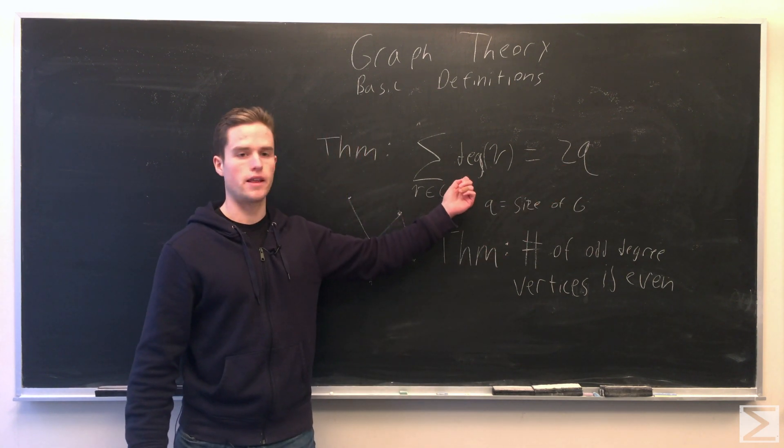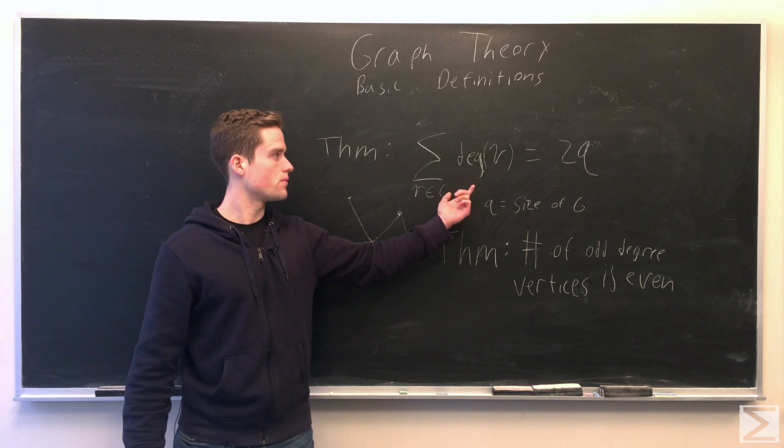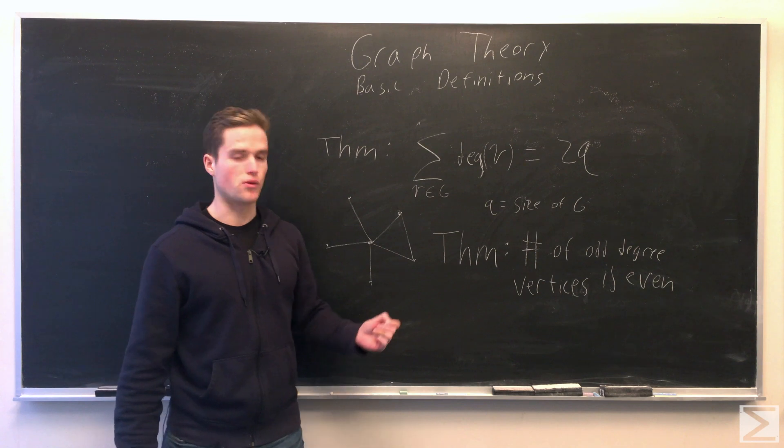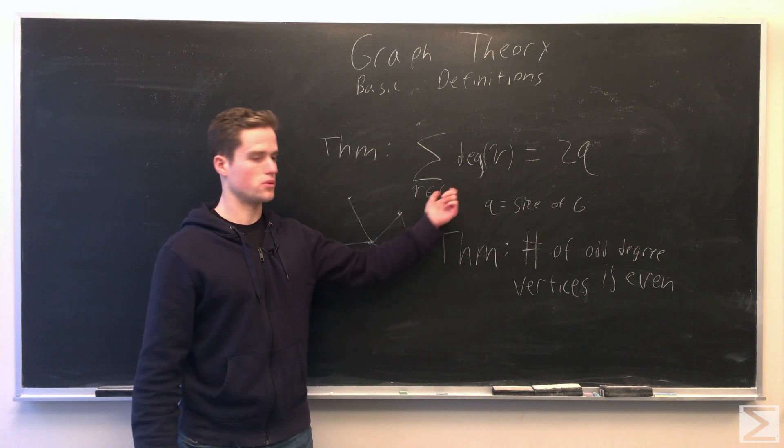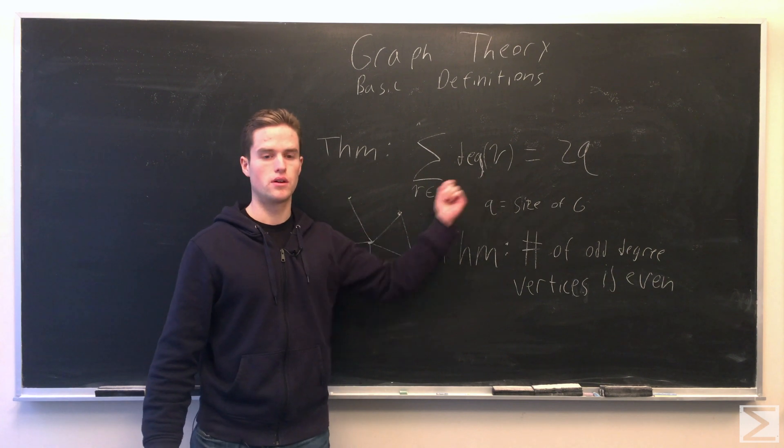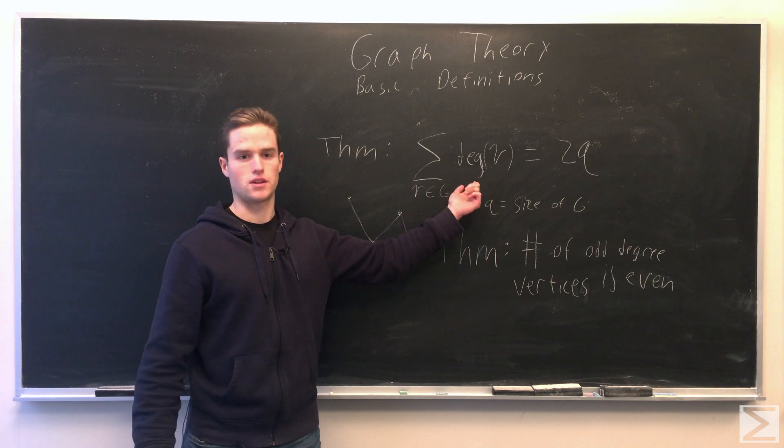On the left, any even degree vertices, it's just 0 mod 2. And then the odd-degree vertices are 1 mod 2. Now if we have an odd number of odd-degree vertices, 1 plus 1 plus 1 plus 1, an odd amount of time, that's going to be congruent to 1, which is not congruent to 0. So we must have an even number of odd vertices on the left side.